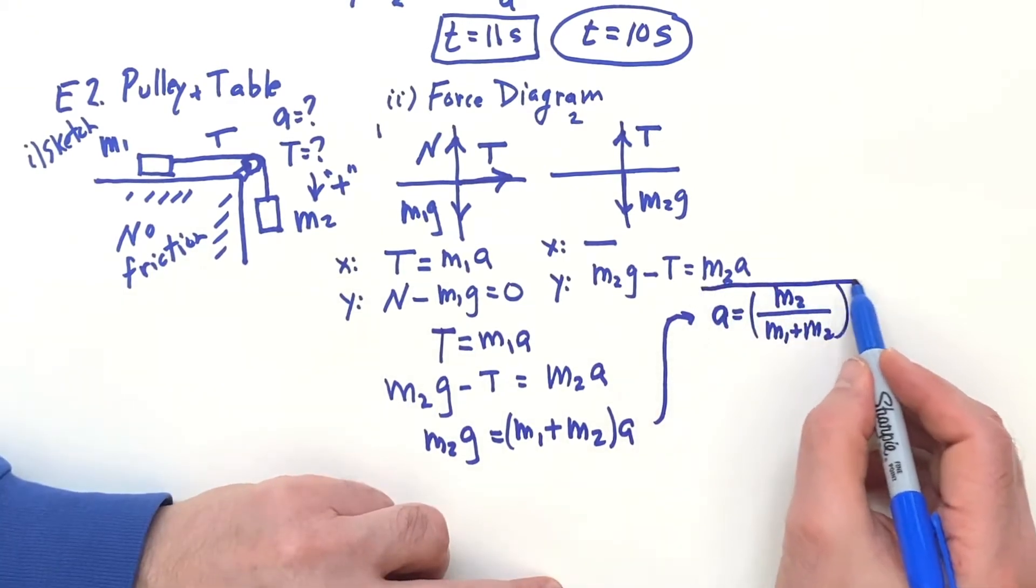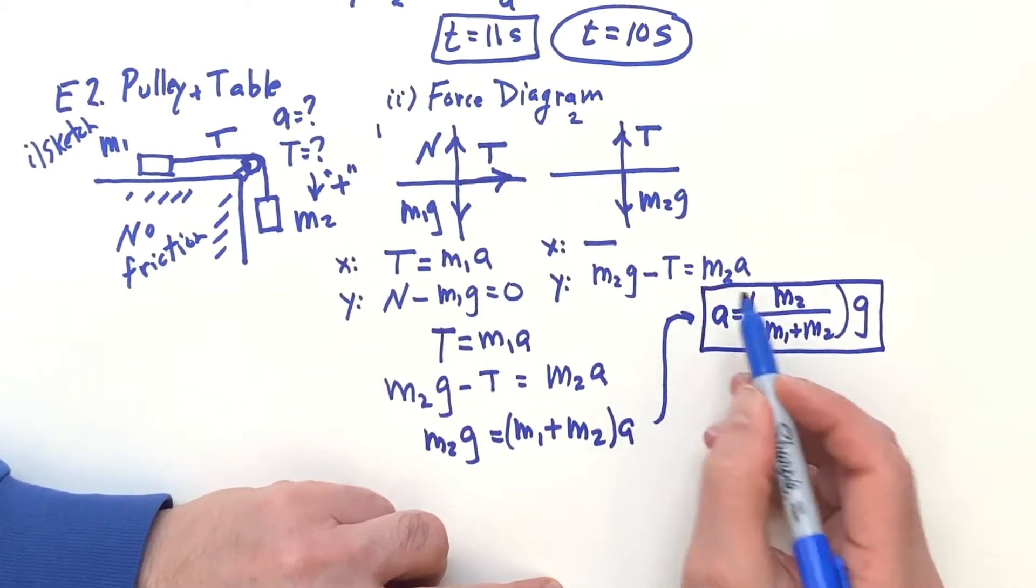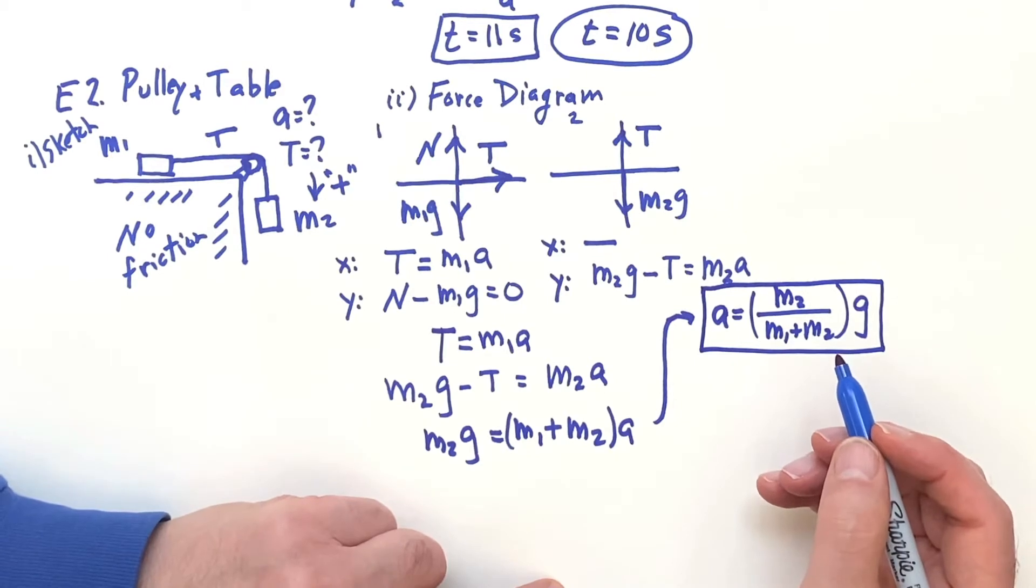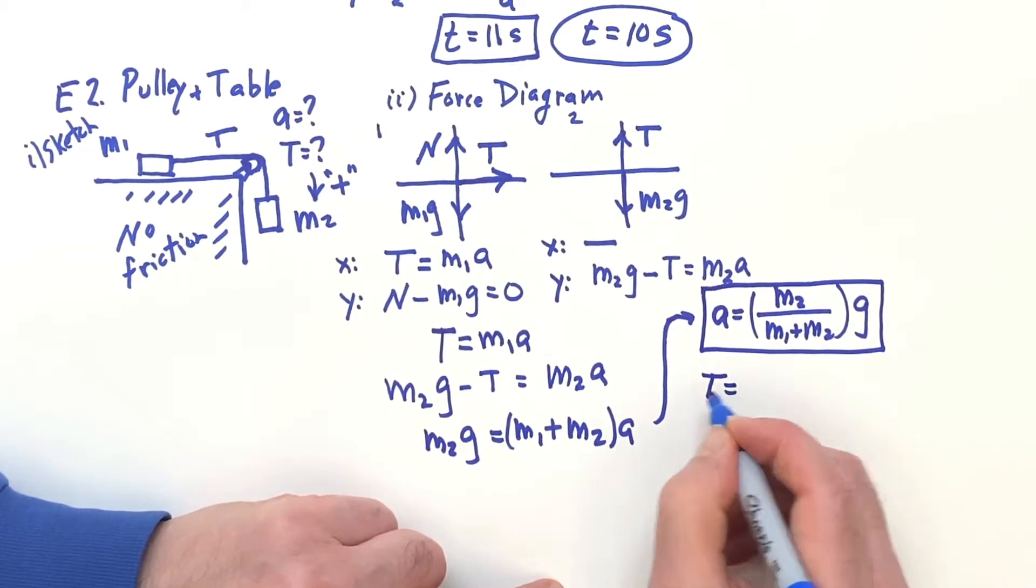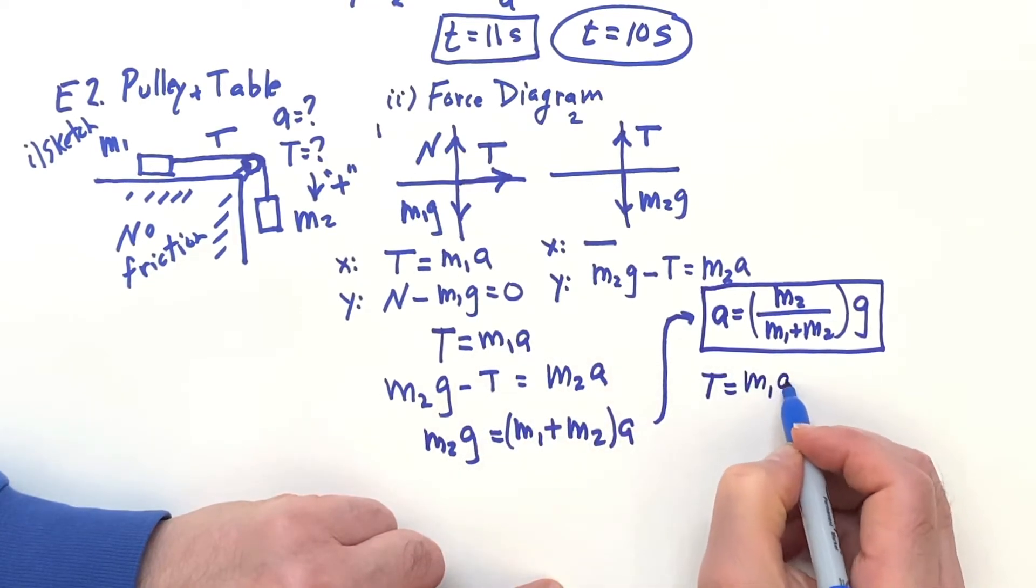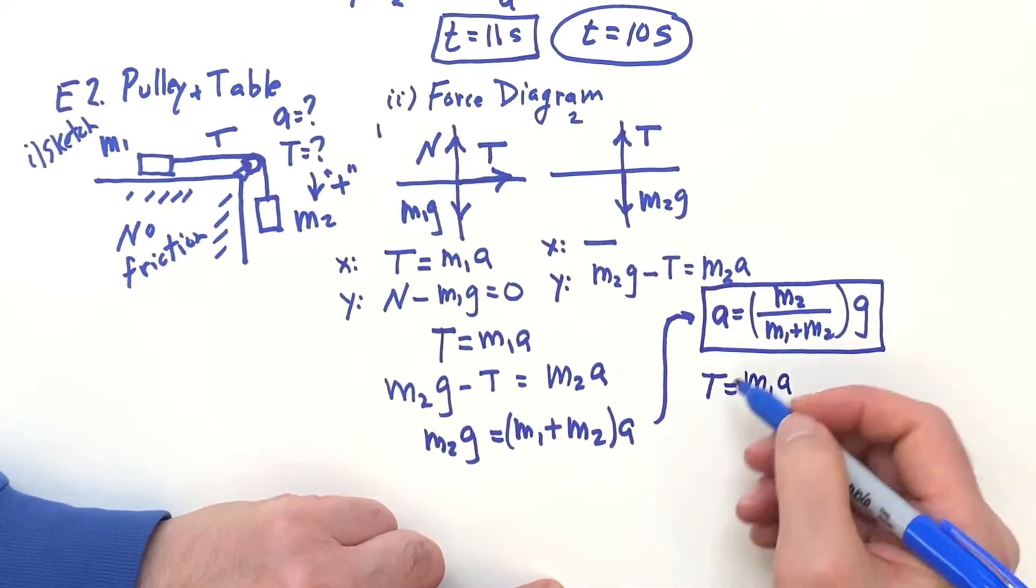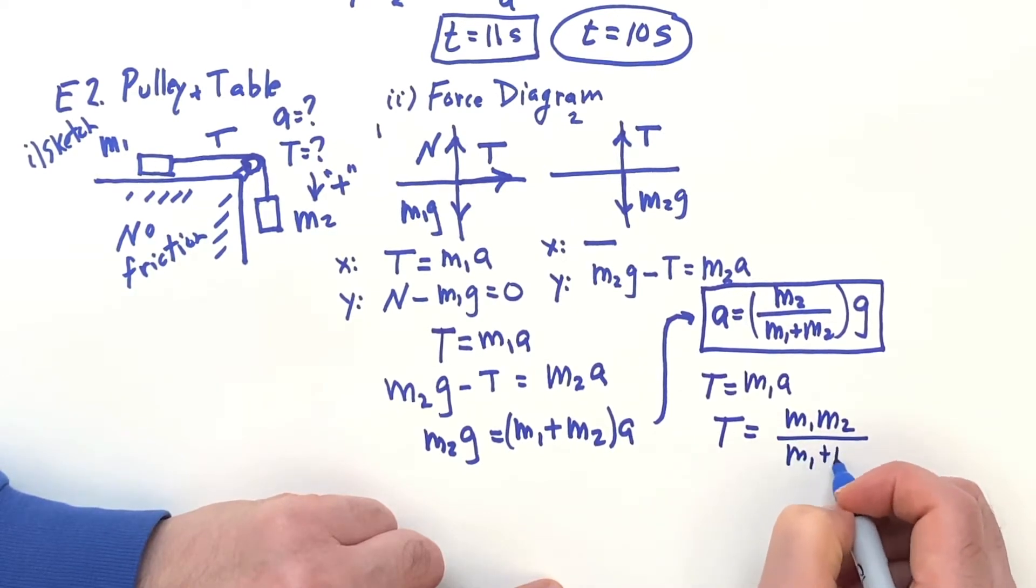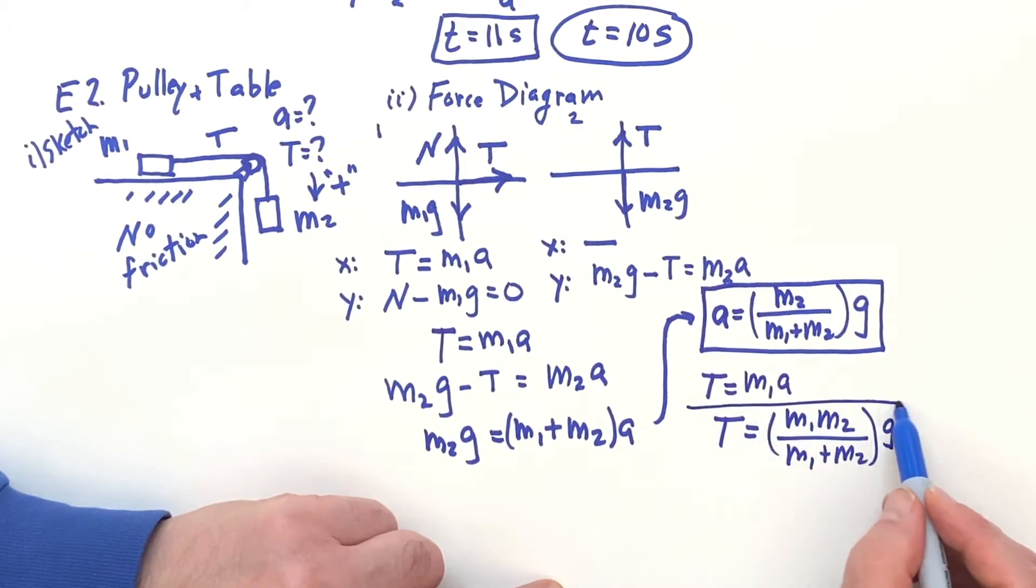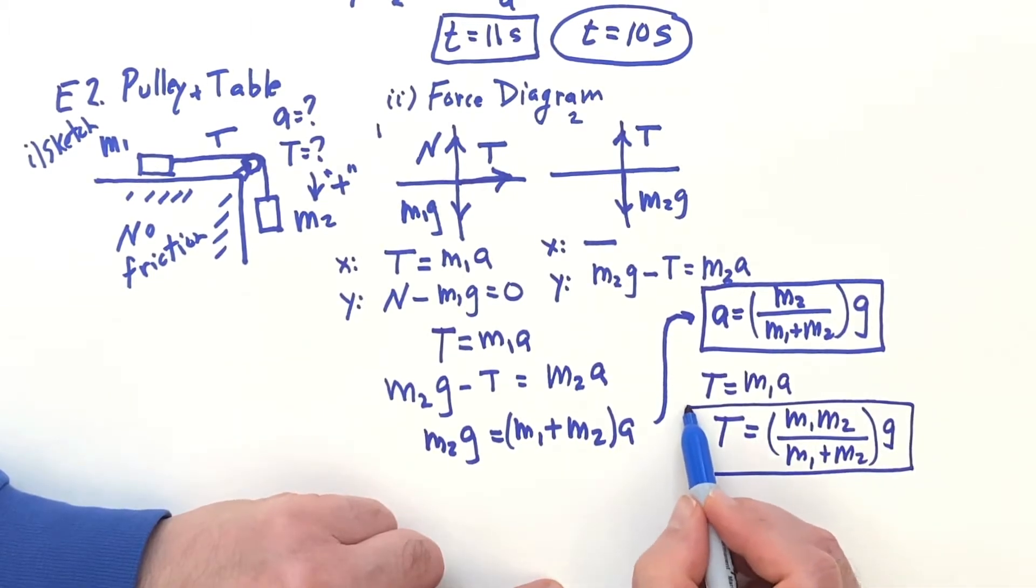So that's the answer for one of the questions. And then the answer for the T we can go ahead and use this first equation: M one times M two over M one plus M two times G. So we're basically finished.